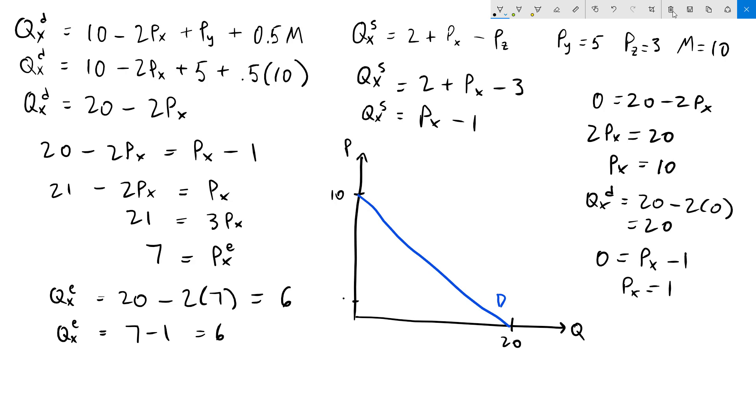So our intercept happens right here. For the supply curve, of course, we have an upward sloping curve. I'll draw that in with red. It's going to look something like this. Where these two curves cross is going to be our equilibrium.